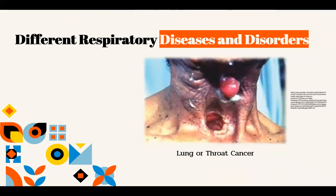Different respiratory diseases and disorders. A polluted environment is a melting pot of various substances and microorganisms that can harm the body. Most of the time, these harmful elements enter the body through the nose and mouth and affect the respiratory system. Here are some common ailments of the respiratory system due to a polluted environment.